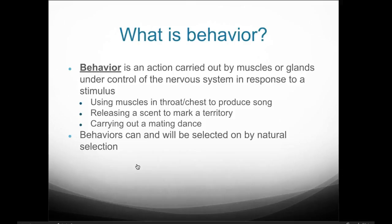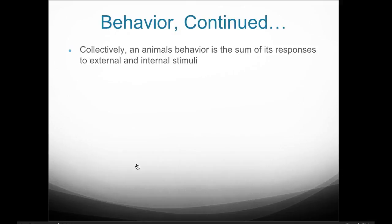Behaviors themselves can and will be selected on by natural selection. Natural selection is a process that helps drive evolution and bring about changes ultimately through DNA. We see behavior being both of a genetic base and of environmental influence. Collectively, an animal's behavior is the sum of its responses to both external and internal stimuli.